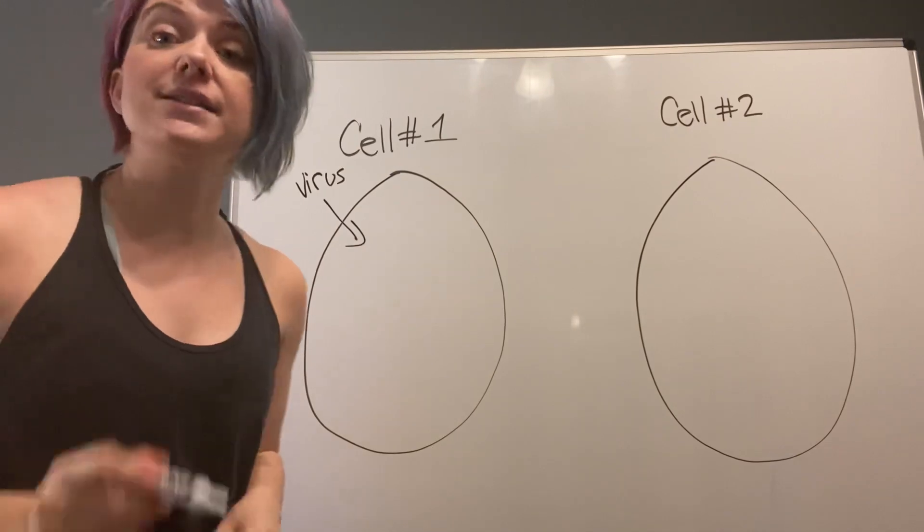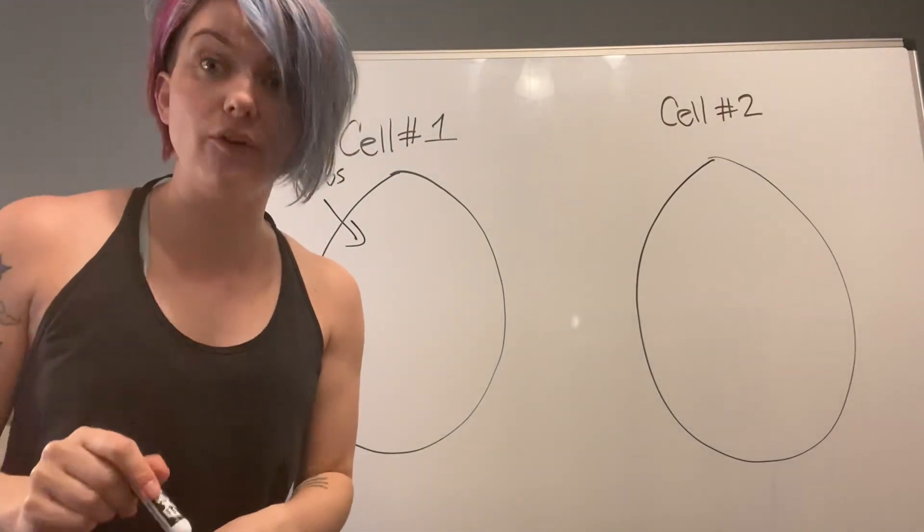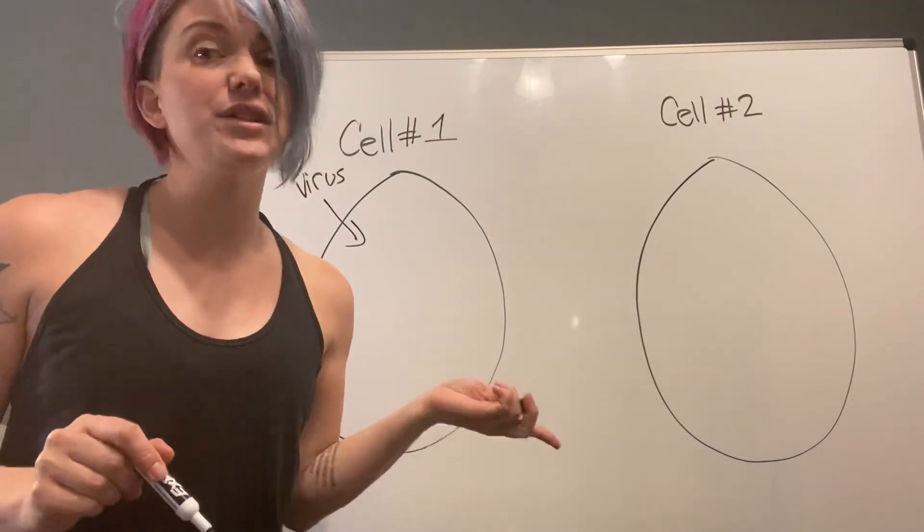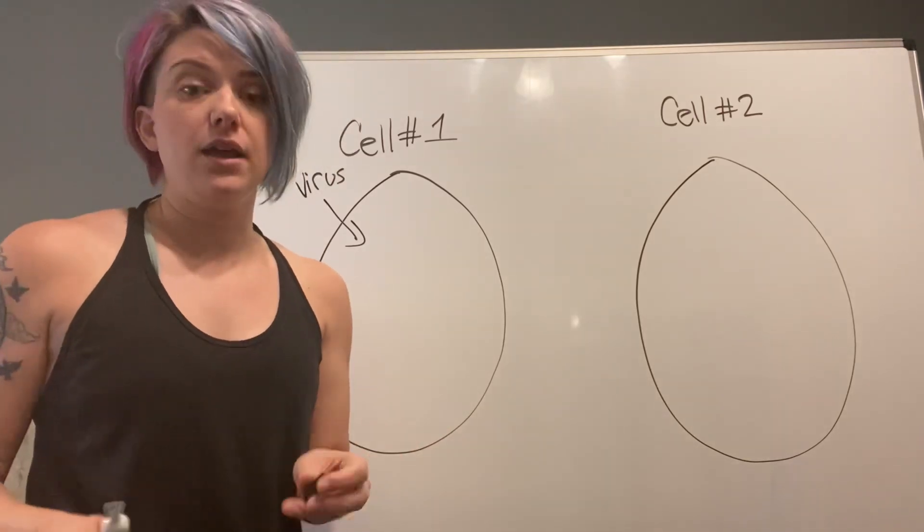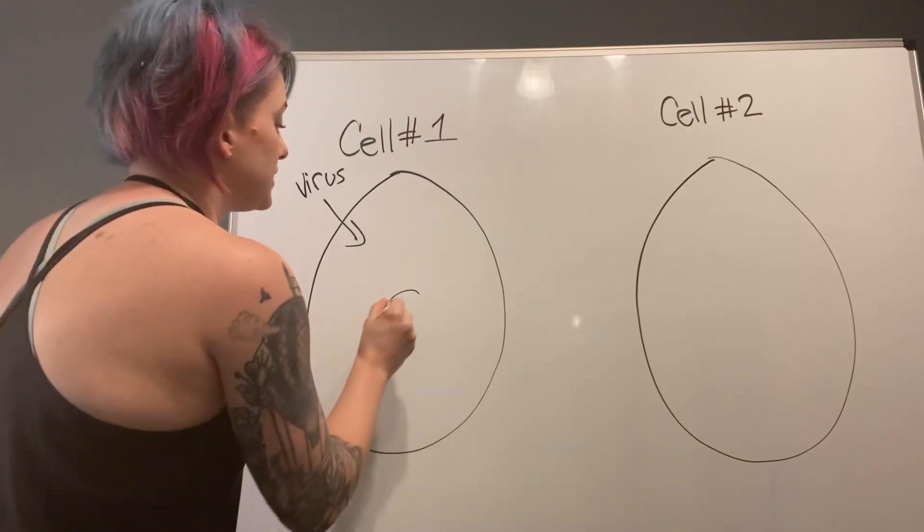So the viral RNA is going to come into the cell and take over. So this cell is pretty much done for. This cell didn't know it was coming for it and it's probably going to die. So we have our nucleus of our cell here.